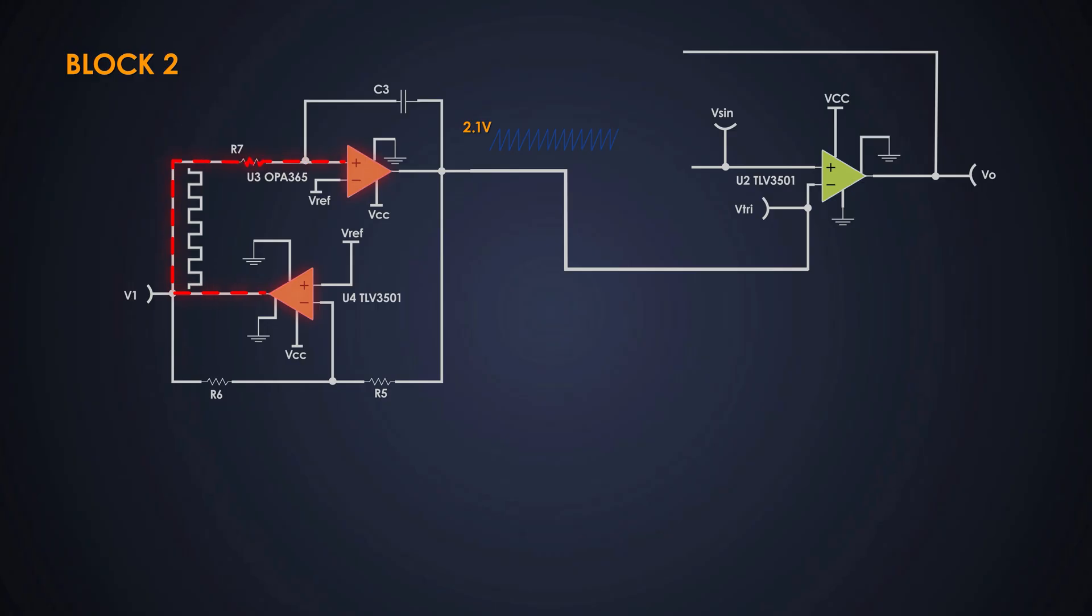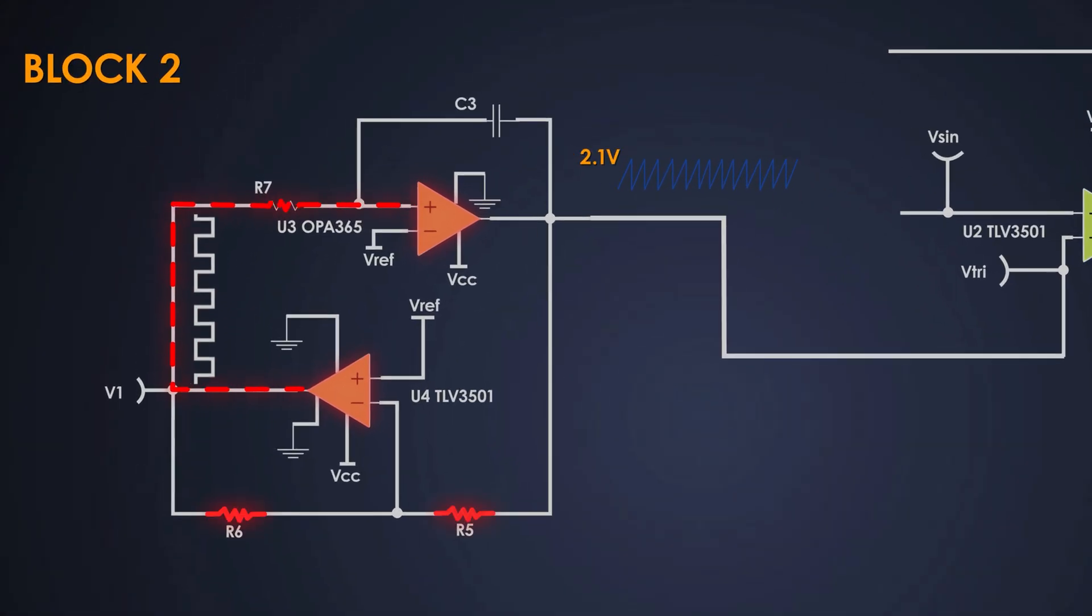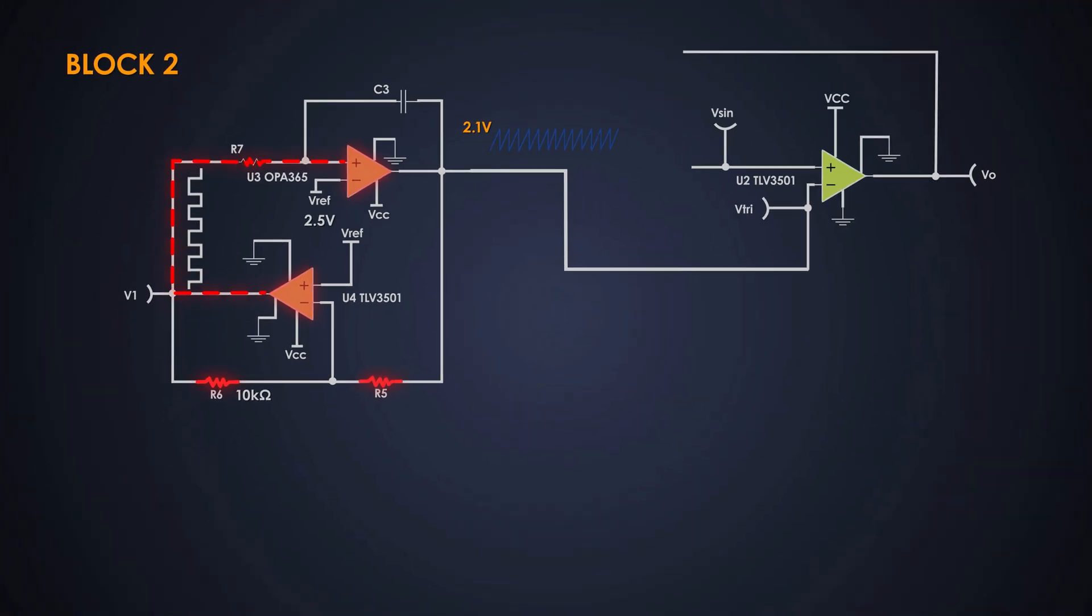To control the amplitude, we use a voltage divider with resistor R5 and R6. We already have Vref as 2.5 volts and R6 as 10 kilo ohms. To achieve 2.1 volts peak-to-peak, we calculate R5 using this formula. So we get 8.45 kilo ohms resistor for R5.